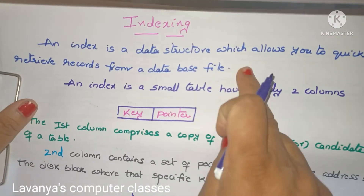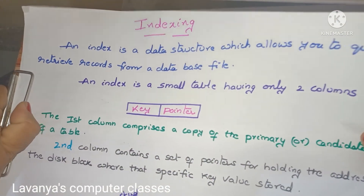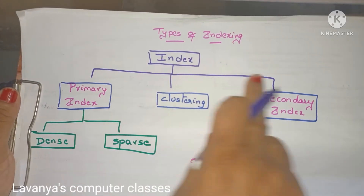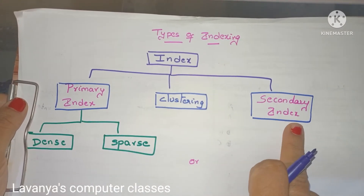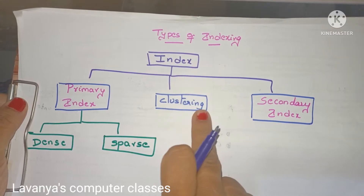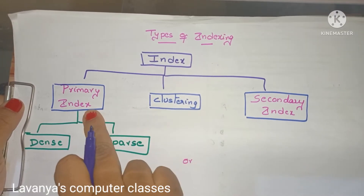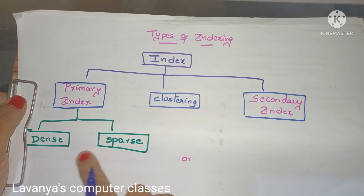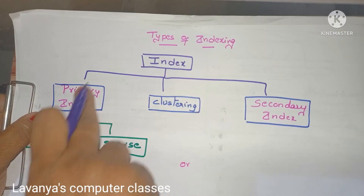That is the definition of indexing and how an index looks with two columns. Next, we go to what are the types of indexing. There are different types of indexing. The main categories are two: primary index and secondary index, but in between there is also clustering indexing. So the main types are: primary index, clustering index, and secondary index. Primary index is further divided into dense index and sparse index.